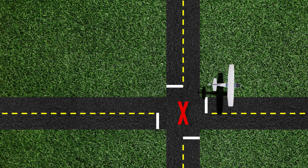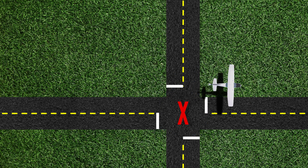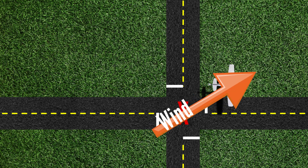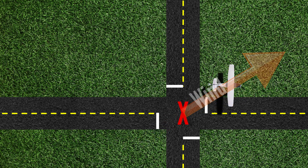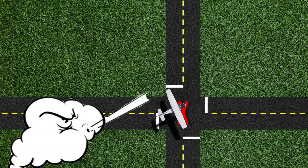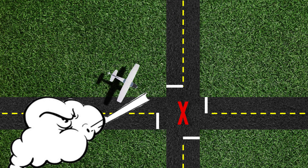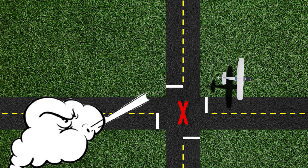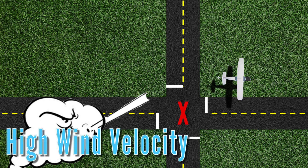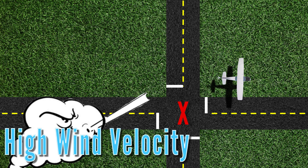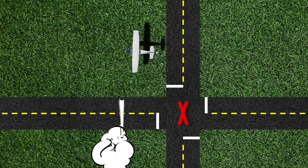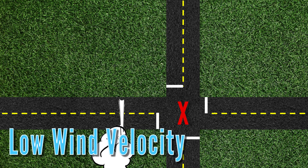The pilot then notes the difference in position between the starting and finishing positions. After the aircraft is rolled out of the 360-degree turn, when they look back at the point, they will be looking into the wind. The aircraft will finish the maneuver downwind from the initial starting point. The velocity of the wind can be determined by the distance the airplane has moved — if the aircraft has moved a large distance, the wind velocity is high, whereas if the aircraft has not moved very far, the wind velocity is low.